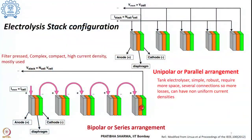The unipolar or parallel arrangement is where each electrode has a single polarity in each electrolytic cell. Also known as a tank electrolyzer, it features simplified connections, is robust, but requires more space. Since there are several connections involved, there are more losses, and it can result in non-uniform current densities because the internal resistance of different cells may differ.